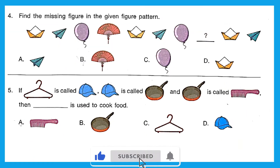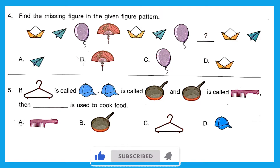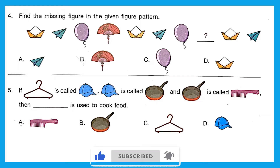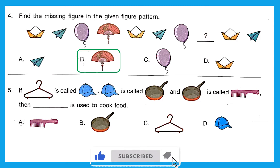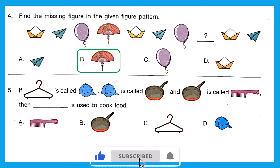Question 4: Find the missing figure in the given pattern. There is a paper boat, then paper aeroplane, then balloon, then hand fan — this pattern repeats. Paper boat, aeroplane, balloon — now what comes next? Hand fan. Option B is the right answer. Question 5: If hanger is called cap, cap is called pan, and pan is called calm, then what is used to cook food? It is pan, and pan is called calm. Option A is the right answer.